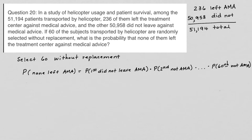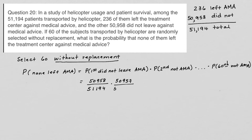So what we would normally do, because this says without replacement, is start with how many did not leave AMA to begin with: that was 50,958 out of 51,194. And then, because this is without replacement, the next one is going to be 50,957 out of 51,193. Then the third one is 50,956 over 51,192, and we go all the way down. But you can see this is going to be really tedious and take a long time to calculate.